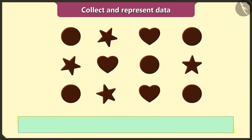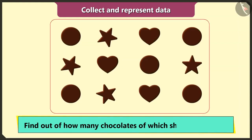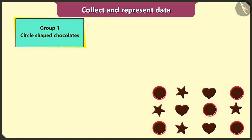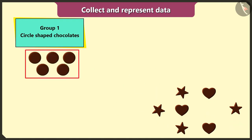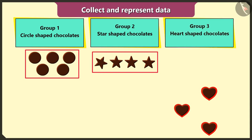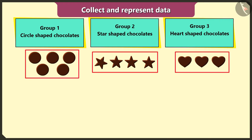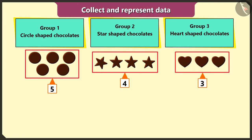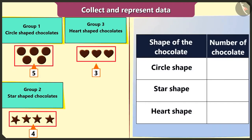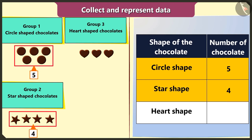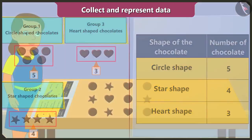Now let me find out how many chocolates of which shapes I have. First, I will group chocolates based on their shapes: first group of circle-shaped chocolates, second group of star-shaped chocolates, and third group of heart-shaped chocolates. In the first group, five circle-shaped chocolates; in the second group, four star-shaped chocolates; and in the third group, three heart-shaped chocolates. I will represent all this data by making a table: circle-shaped=five, star-shaped=four, heart-shaped=three.